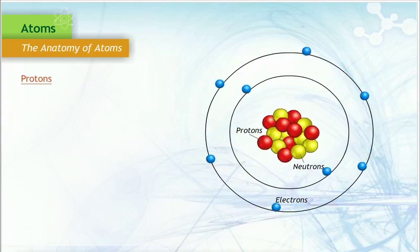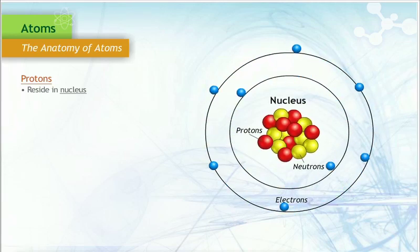Both the protons and neutrons reside in the middle of the atom, or the nucleus. Electrons reside in orbitals around the nucleus.